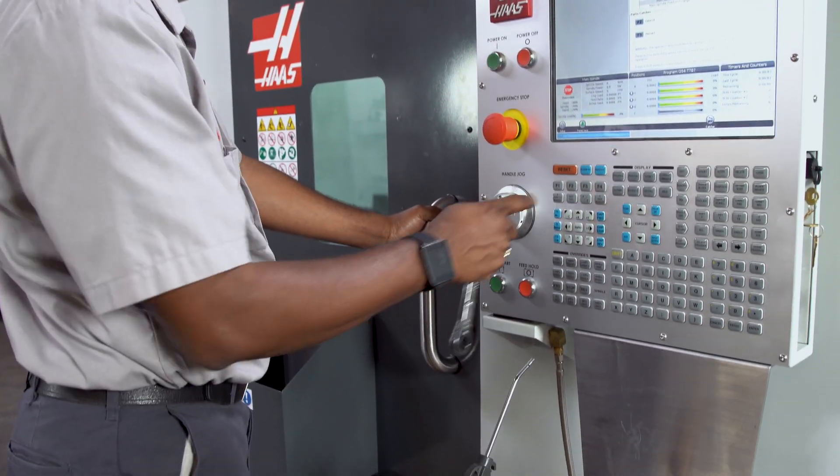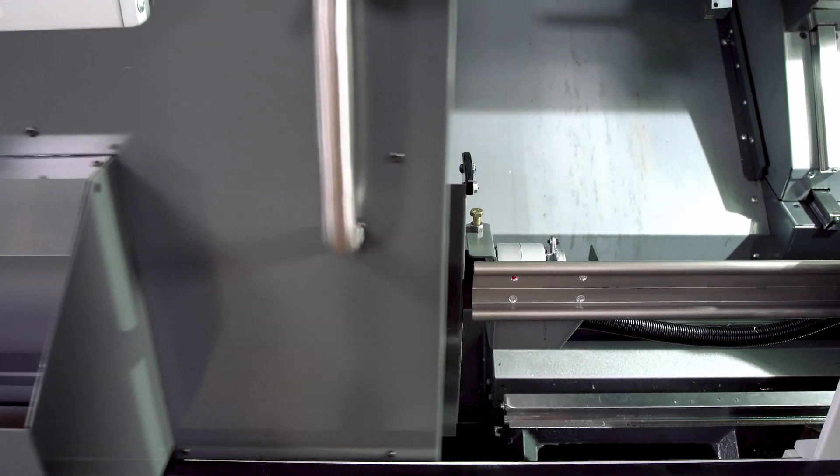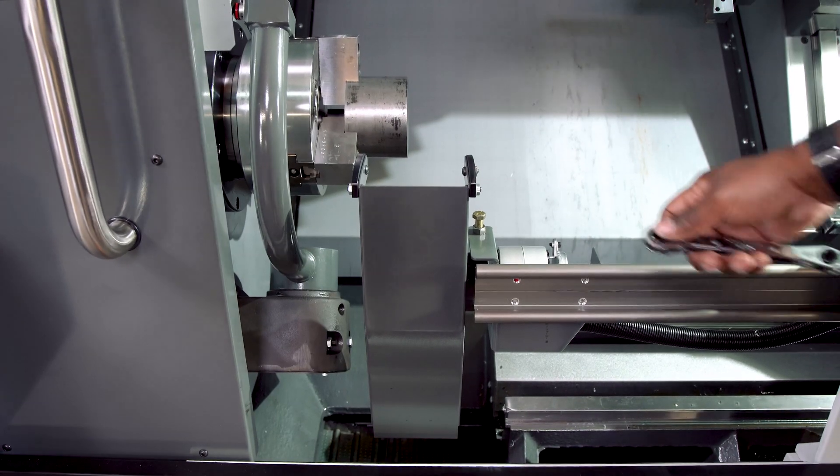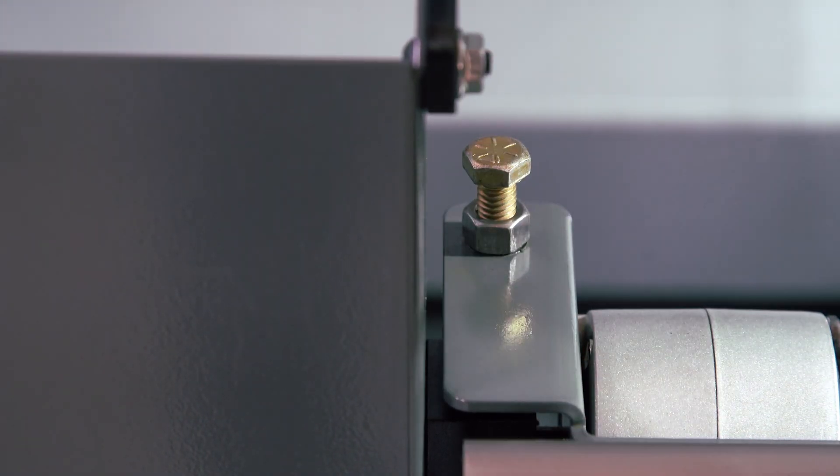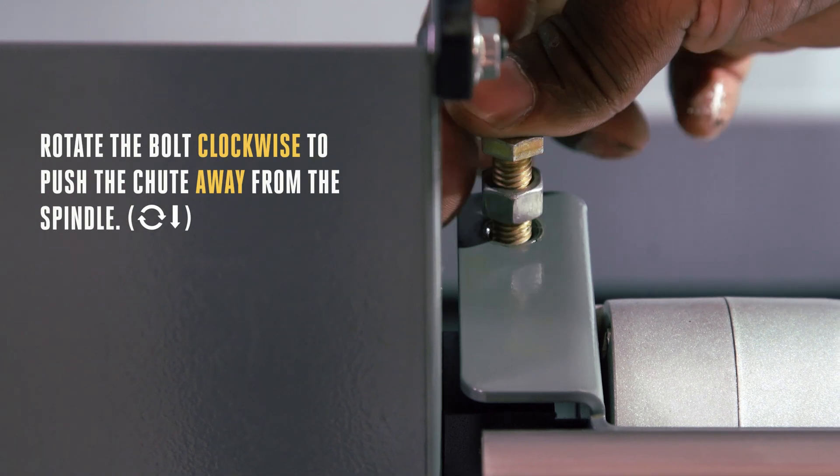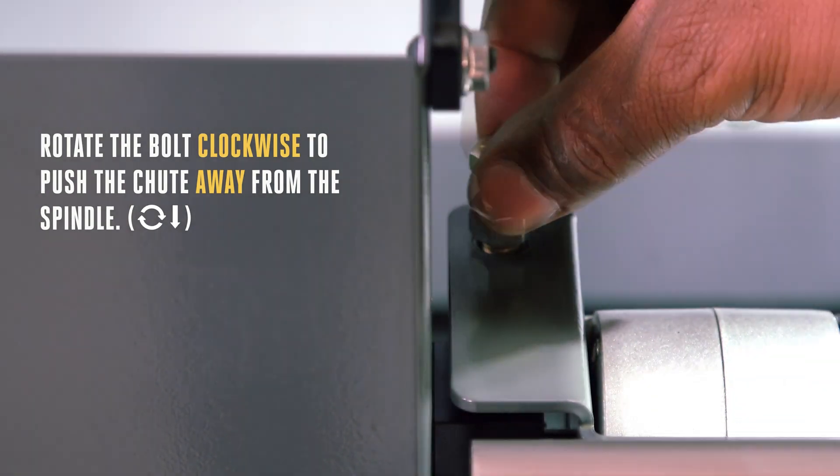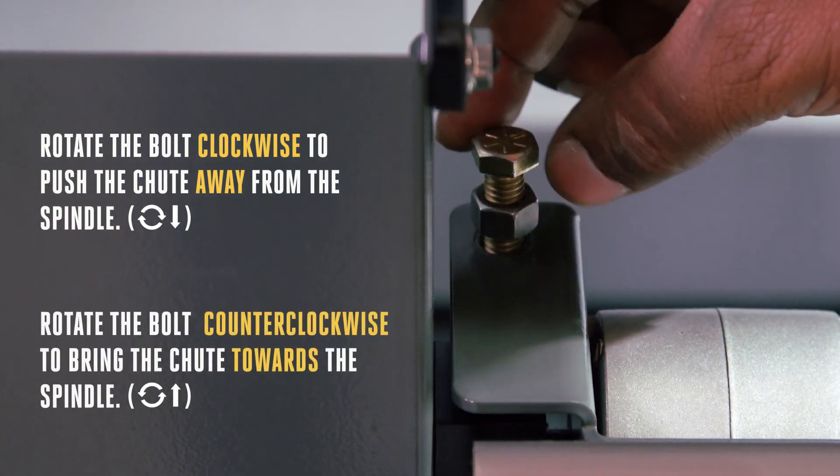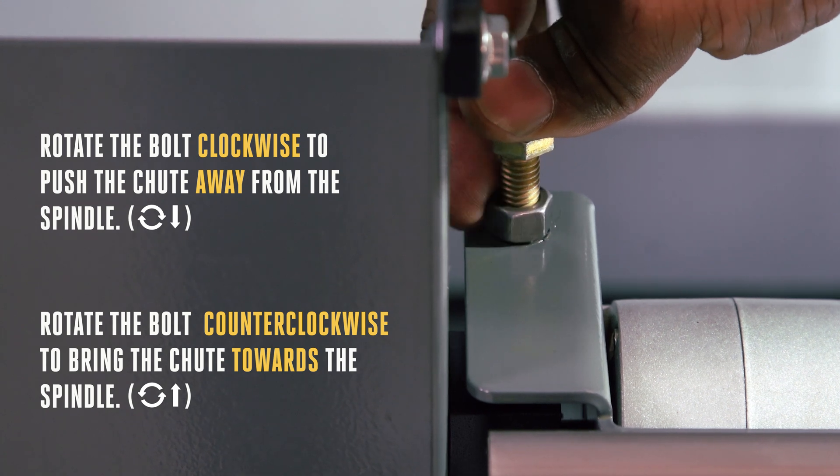Press F3 again. The chute will rotate back to its stowed position. Open the door and make your adjustment using a 9/16 box wrench. Loosen the jam nut and then adjust the bolt for the chute stop. Rotate the bolt clockwise to push the chute away from the centerline of the spindle or rotate the bolt counterclockwise to pull the chute closer to the spindle centerline, and then tighten the jam nut.